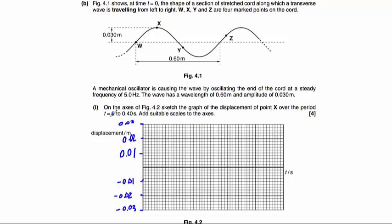Our time is being measured between 0 and 0.4, so we could have 0.1 seconds, 0.2 seconds, 0.3 seconds, and 0.4 seconds. That's the scales sorted.